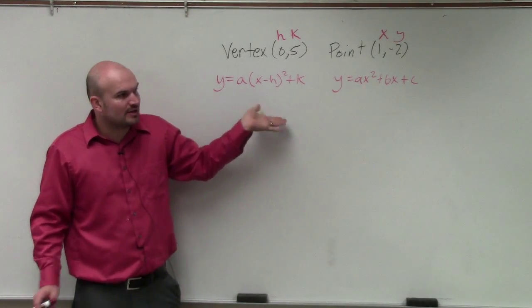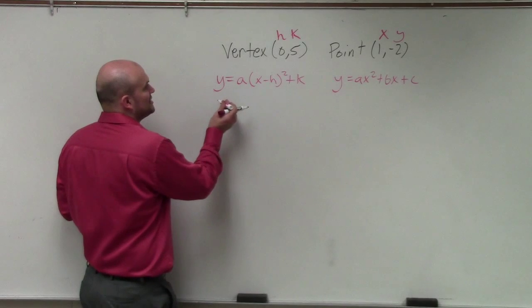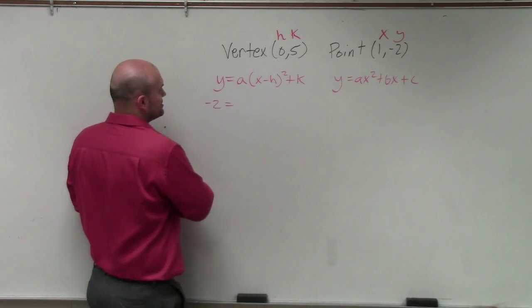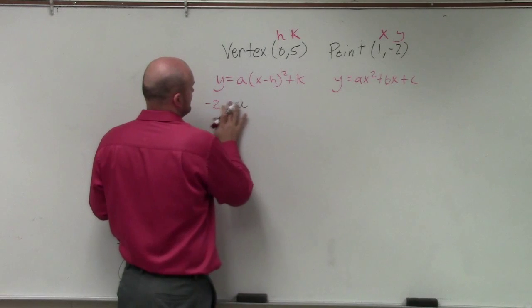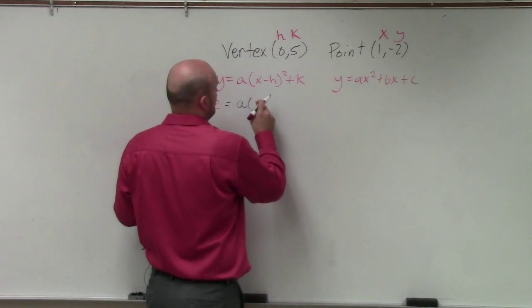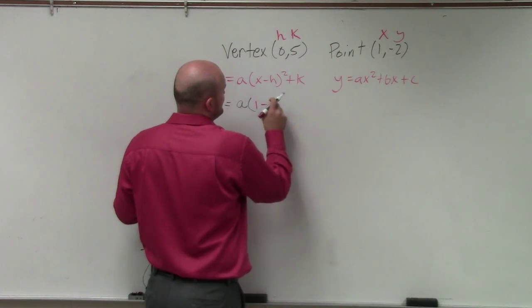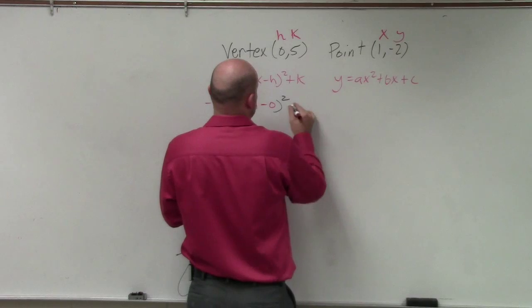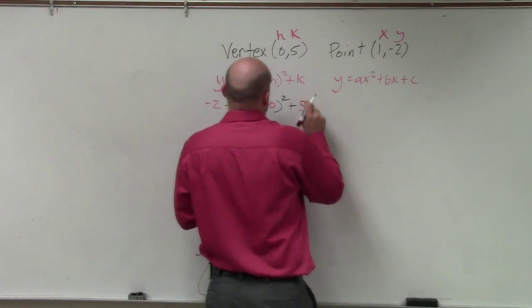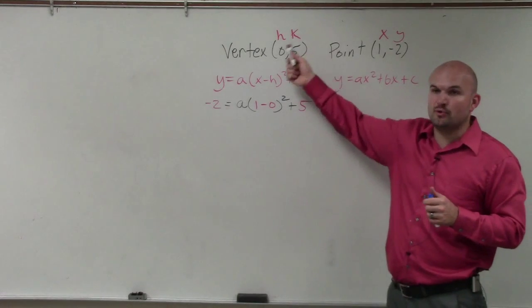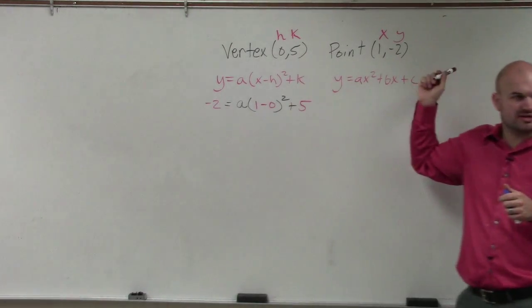So to write the equation, what we're going to do is we're going to plug in the information that we're given. So we have negative 2 equals a times x, which is 1, minus 0, squared, plus 5. Does everybody see how I plugged in the points for h and k into the equation and the points for x and y in?